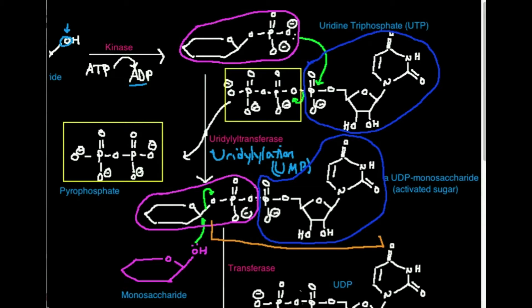This is what's referred to as an activated sugar. Why is it an activated sugar? Well, here's the reason why. The reason it's an activated sugar is because this whole UDP right here that I kind of have bracketed in orange is a fantastic leaving group.